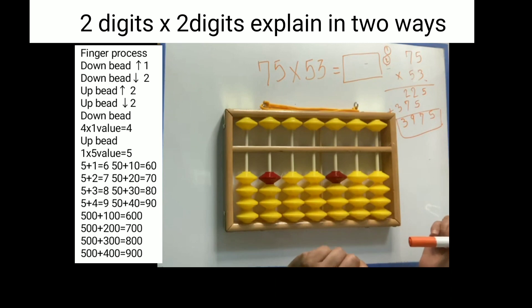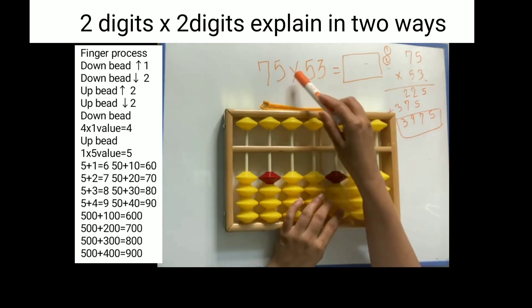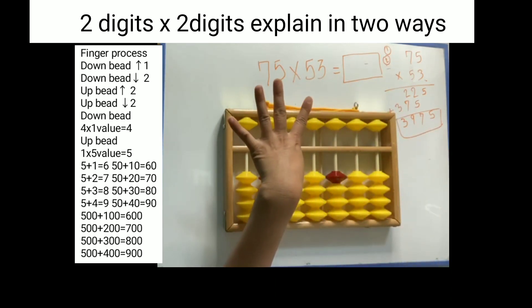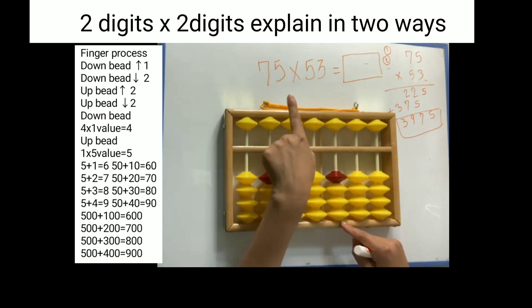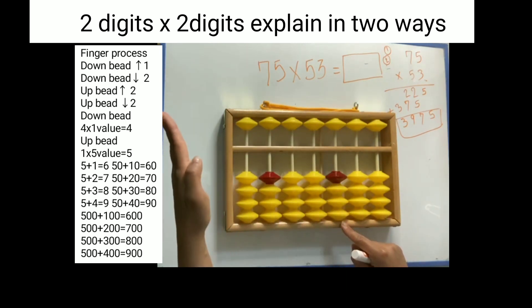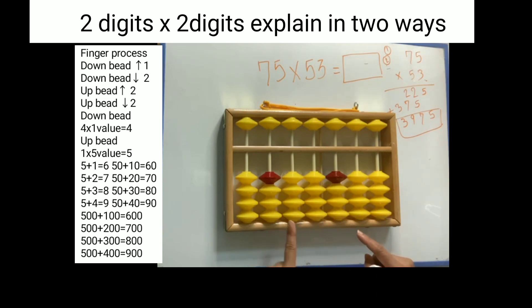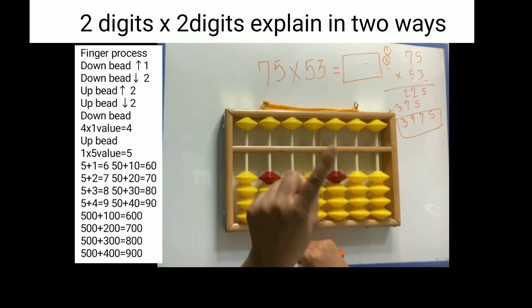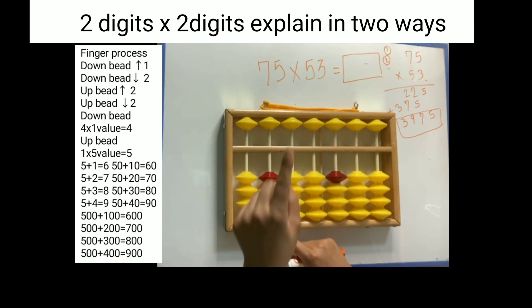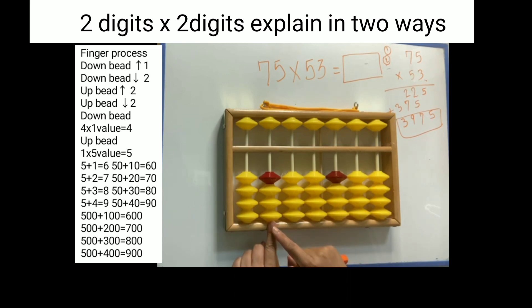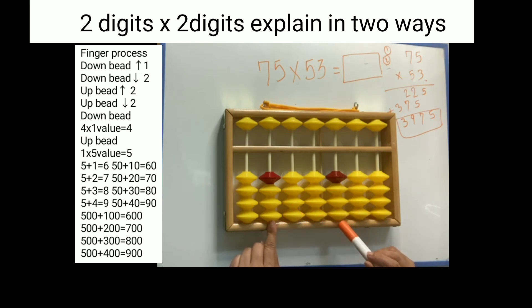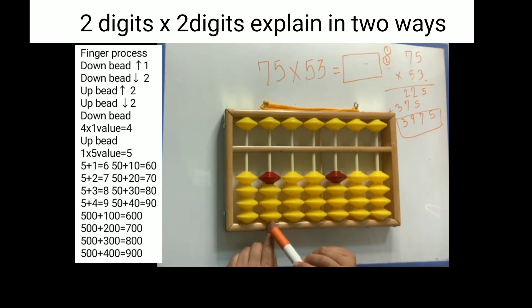First, count all digits in the question: one, two, three, four — four digits. This is my marked dot. Take that counted position to the left side from the marked dot, meaning one, two, three, four. Point your left-hand index finger here. We are starting from here, and this is going to be your new tens place. The ones place is here, the original tens place is here, but this is your new tens place.